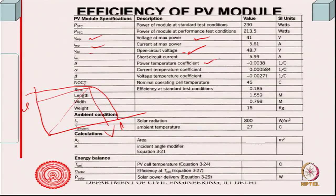Then power temperature coefficient — that is your alpha. And current temperature coefficient and voltage temperature coefficient. So alpha, beta, and delta would also be specified. NOCT is specified because they would have measured it in the laboratory — let us say it is 45 degrees centigrade.